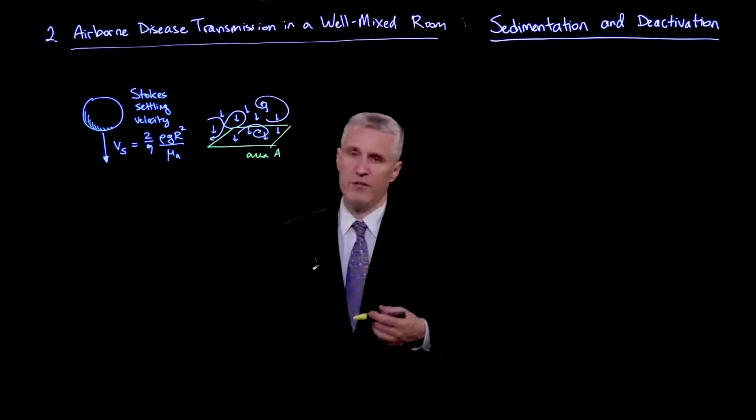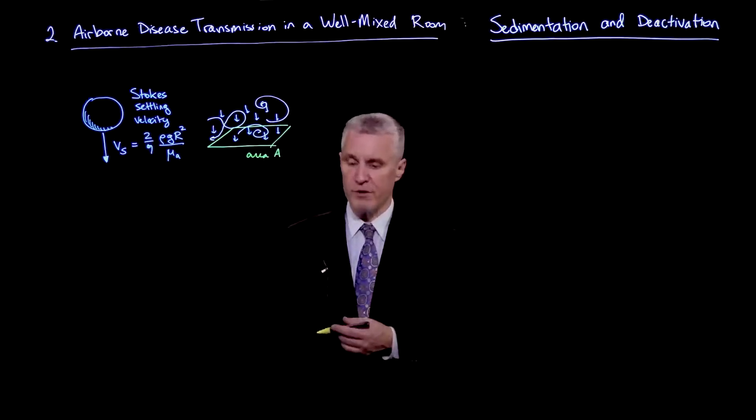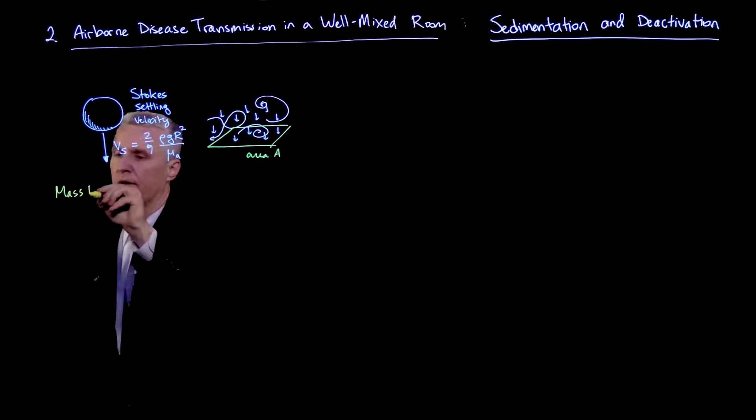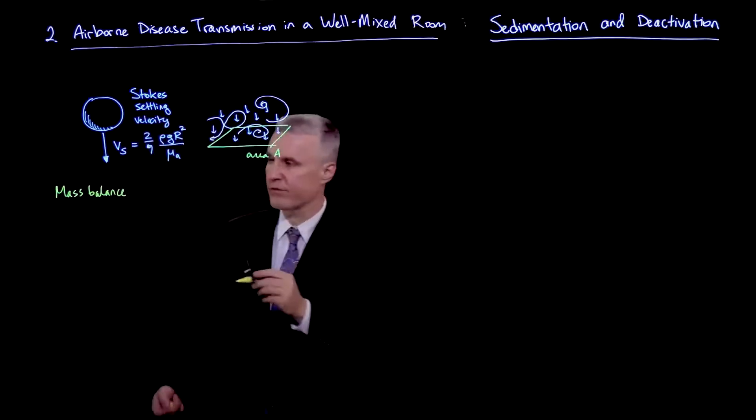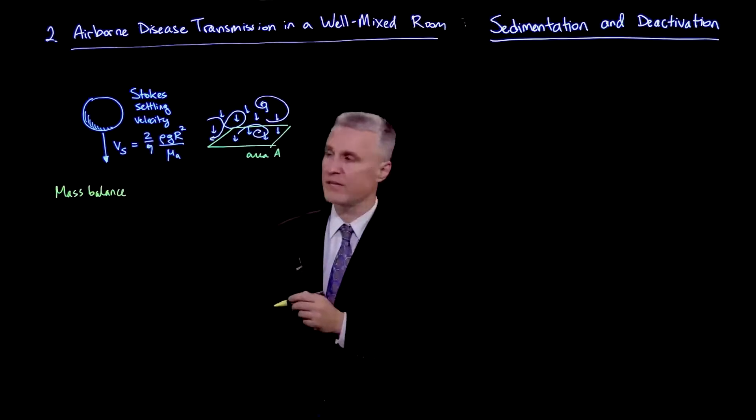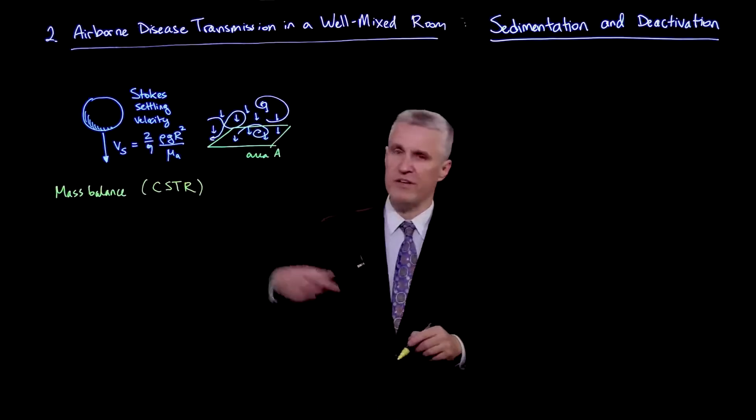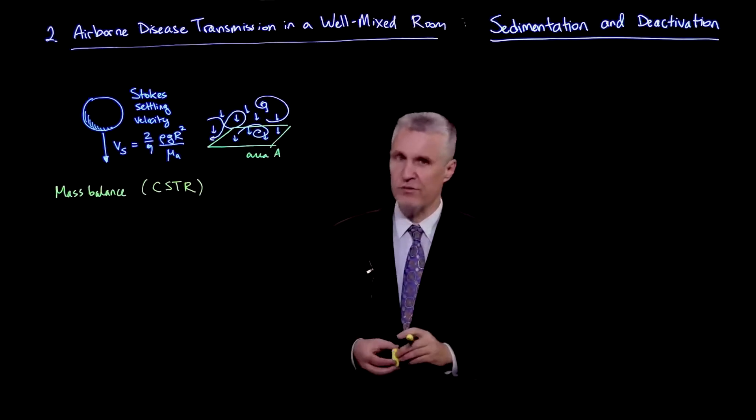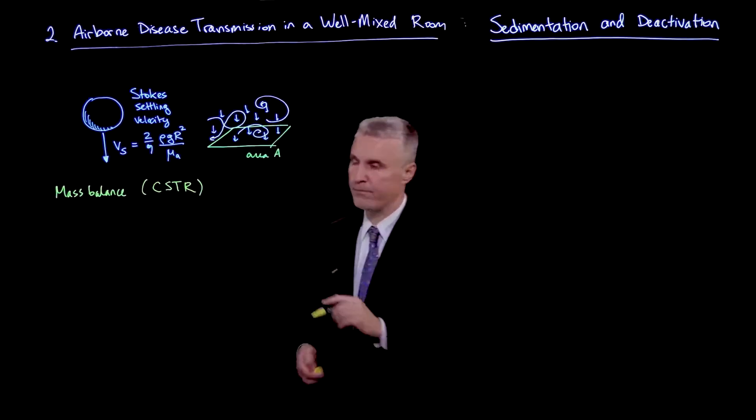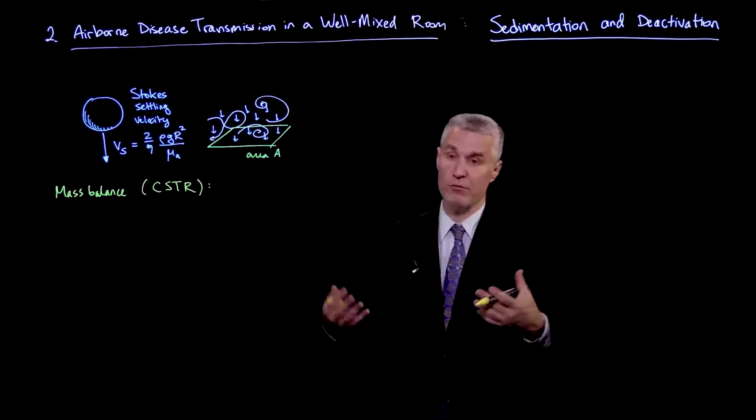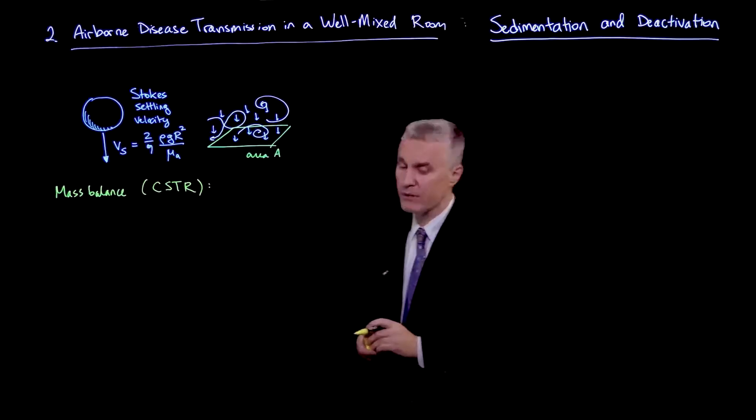So if we now add those two effects to our existing model, I'll just keep rewriting our mass balance equation. And this is the mass balance for the concentration of virions in the air. I've also used the terminology in chemical engineering. We're going to call this kind of approximation the CSTR, or the Continuously Stirred Tank Reactor Approximation.